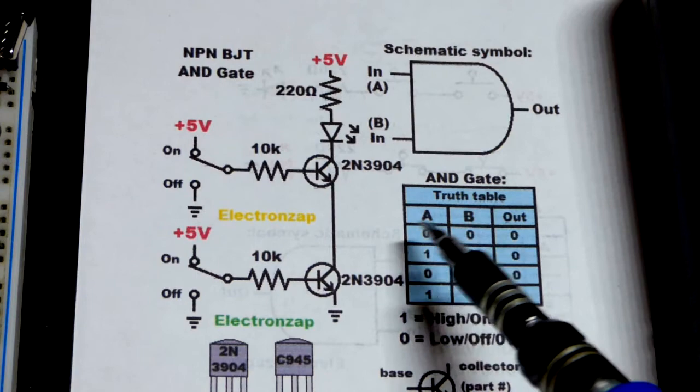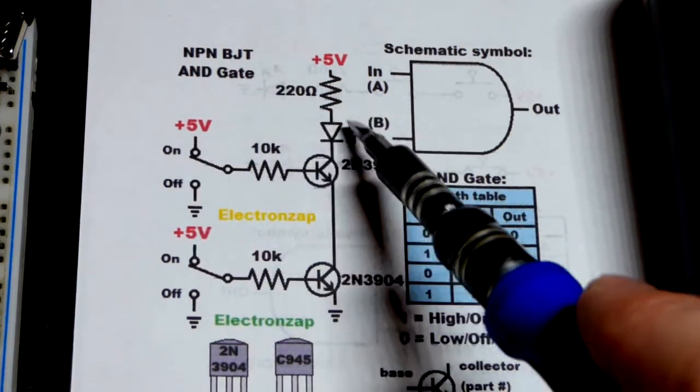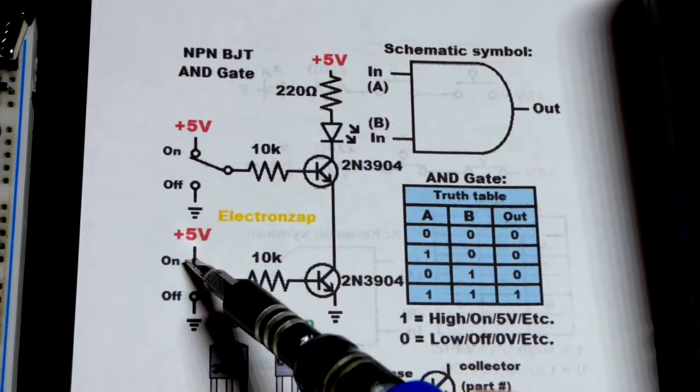Truth table of course is that the only way for the output to be on is for both inputs to be on.